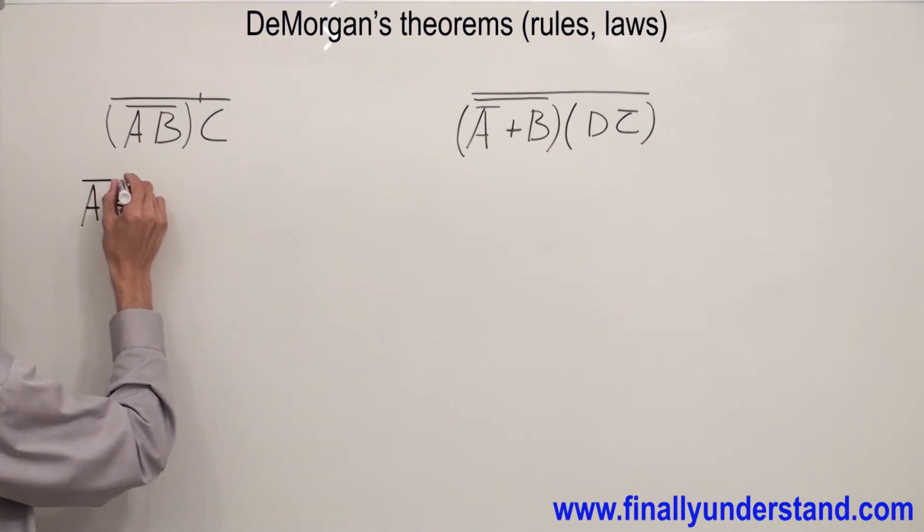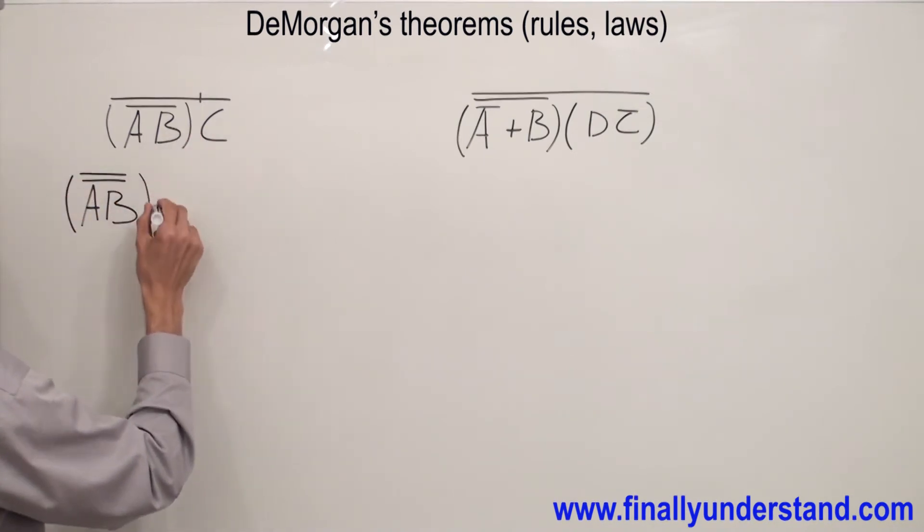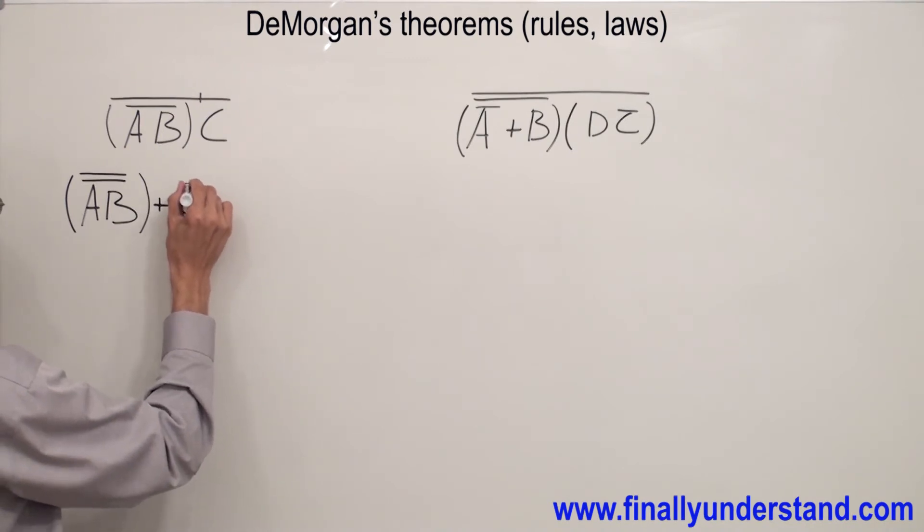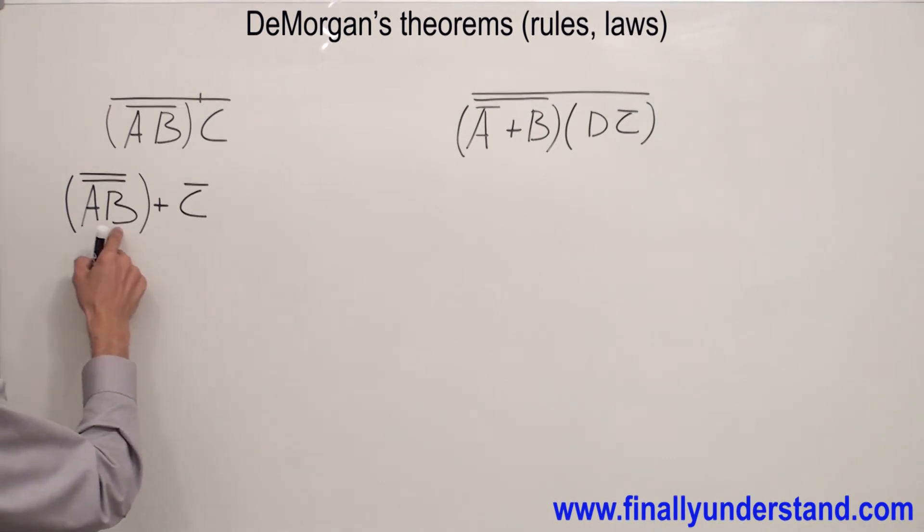So I'm going to end up with A̅B̅ note, note, because I cut the bar and AND is supposed to be changed to OR. I'm going to have C̅. Now remember that anything inverted twice is basically the same thing, right? So these two bars are going to cancel each other.